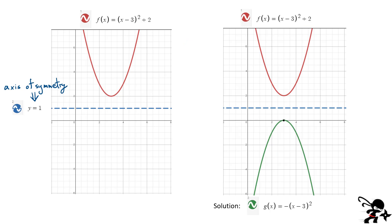Let's consider the same parabola from the previous case, except now the axis of symmetry is y equals 1. We have the same vertex for this parabola with coordinates 3, 2. Now if I wanted to reflect it about this new axis, I measure the distance — it's 1 unit away from the axis of symmetry — so I simply reflect it by moving down 1. The coordinate of this reflected vertex is 3, 0. If I do that for every single point, I get this green curve. I'm going to show you how to get there following a few easy steps.